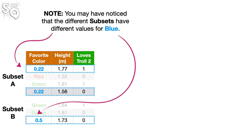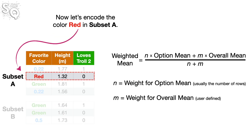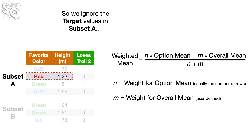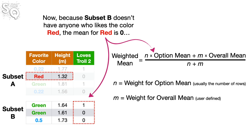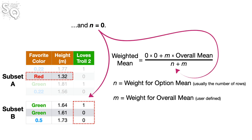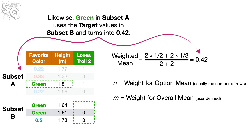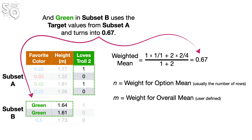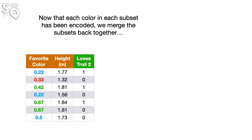Note, you may have noticed that the different subsets have different values for blue. This is OK because Favorite Color is becoming a continuous variable just like Height. Now let's encode the color red in subset A. So we ignore the target values in subset A and instead plug the target values from subset B into the equation for the weighted mean. Because subset B doesn't have anyone who likes the color red, the mean for red is 0 and n equals 0. We end up replacing red in subset A with 0.33. Likewise, green in subset A uses the target values in subset B and turns into 0.42. And green in subset B uses the target values from subset A and turns into 0.67. Now that each color and each subset has been encoded, we merge the subsets back together and we're done.